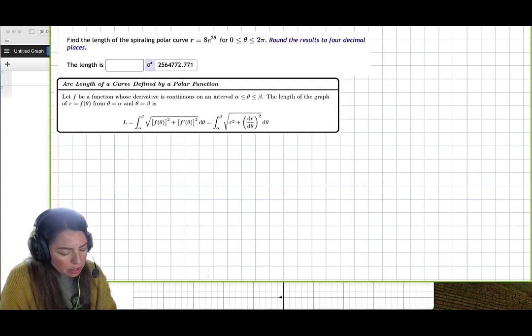Notice that we already have r here. We have our alpha, which is zero, and our beta, which is 2 pi.